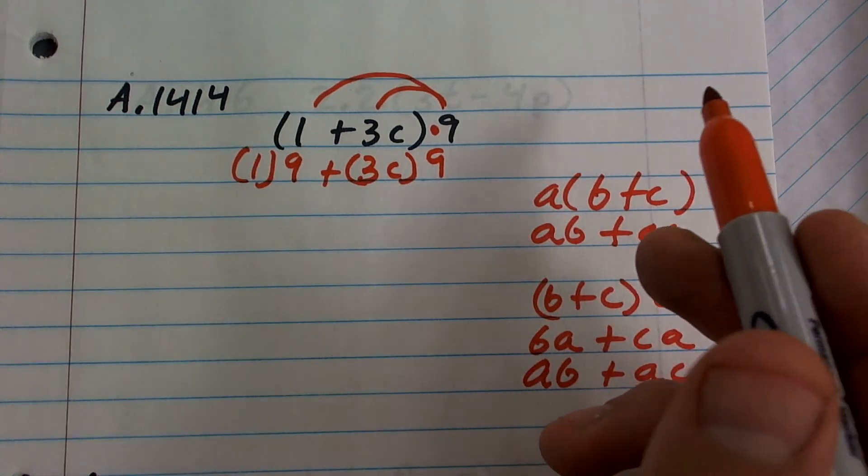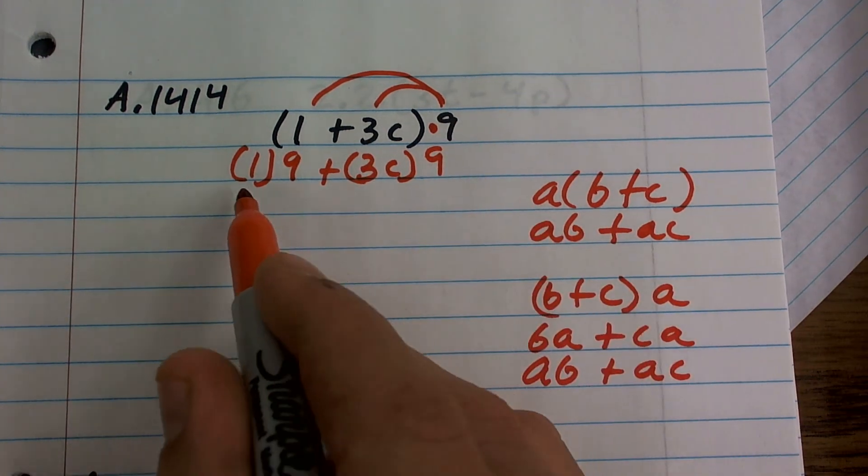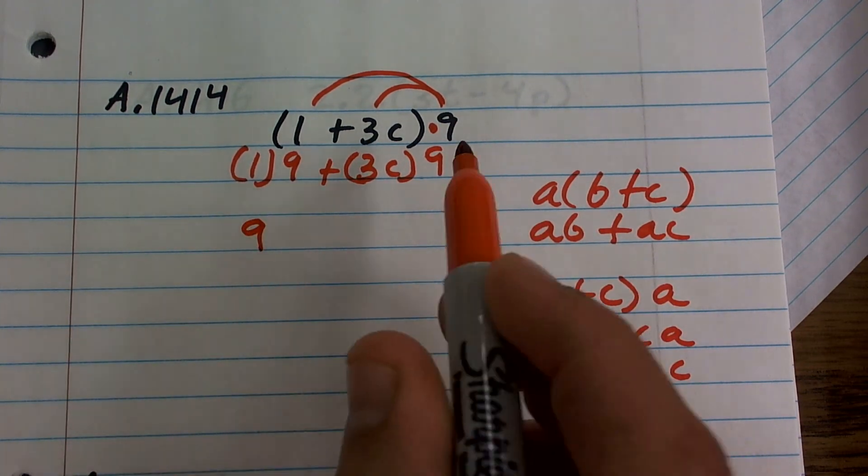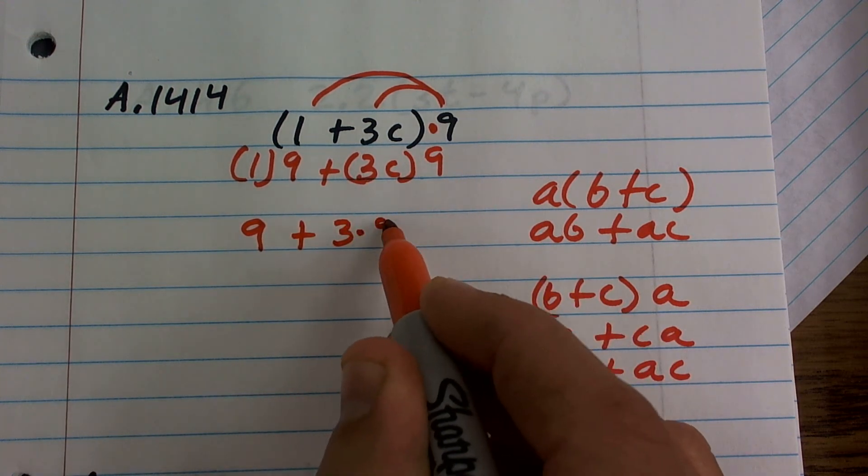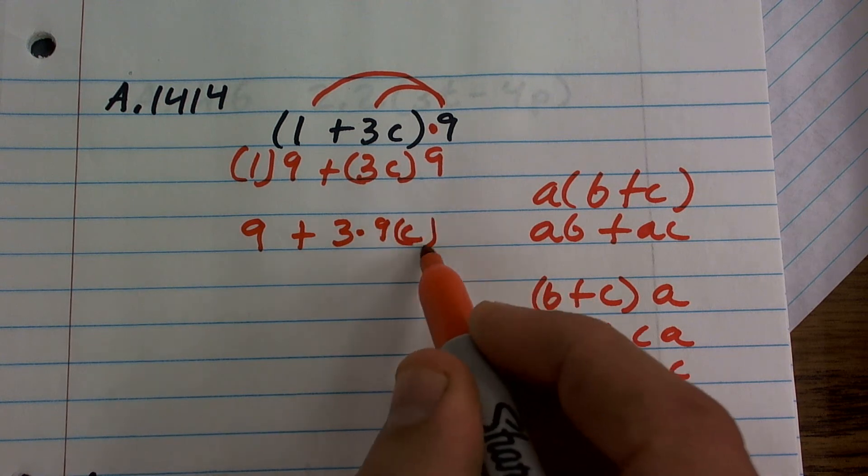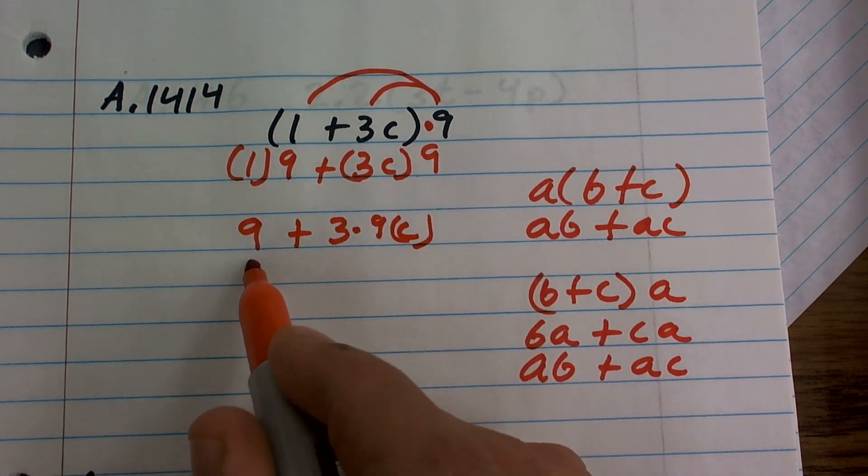However, we always like to write our numbers in front of our variables. So 1 times 9, we can rewrite as 9. And then 3C times 9, I can rewrite this as 3 times 9 times C. And 3 times 9 is going to be 27.